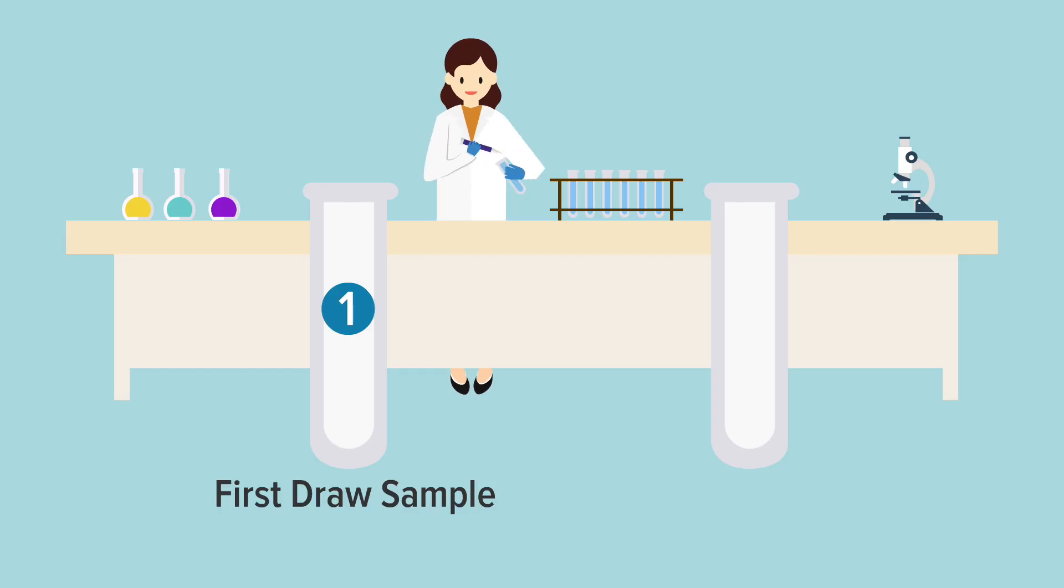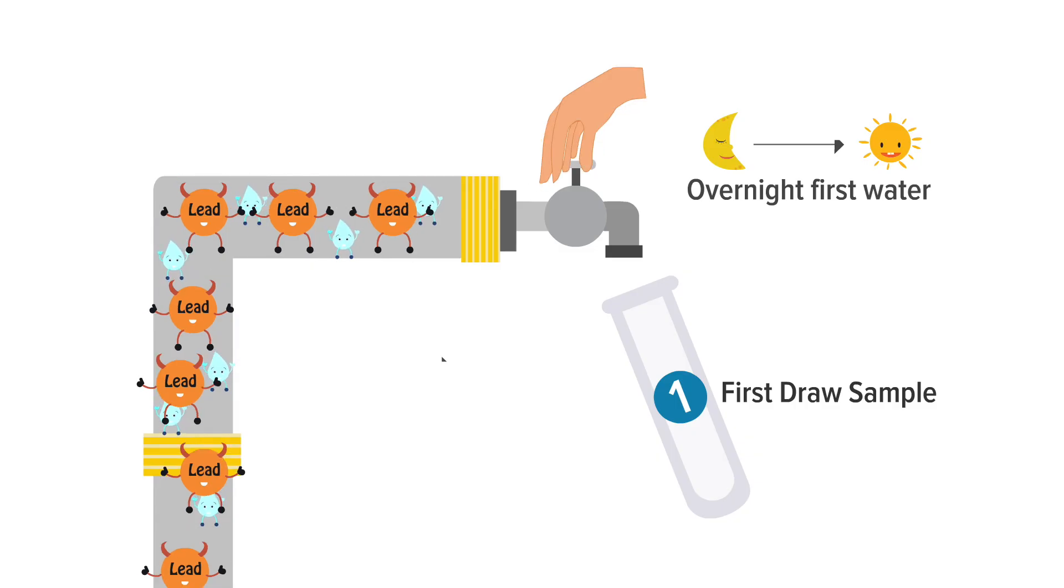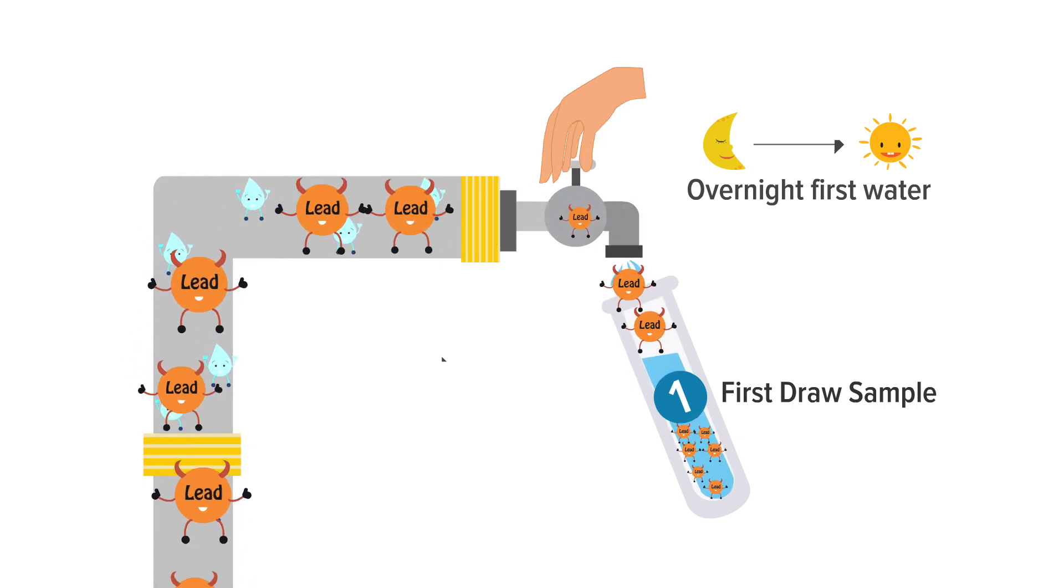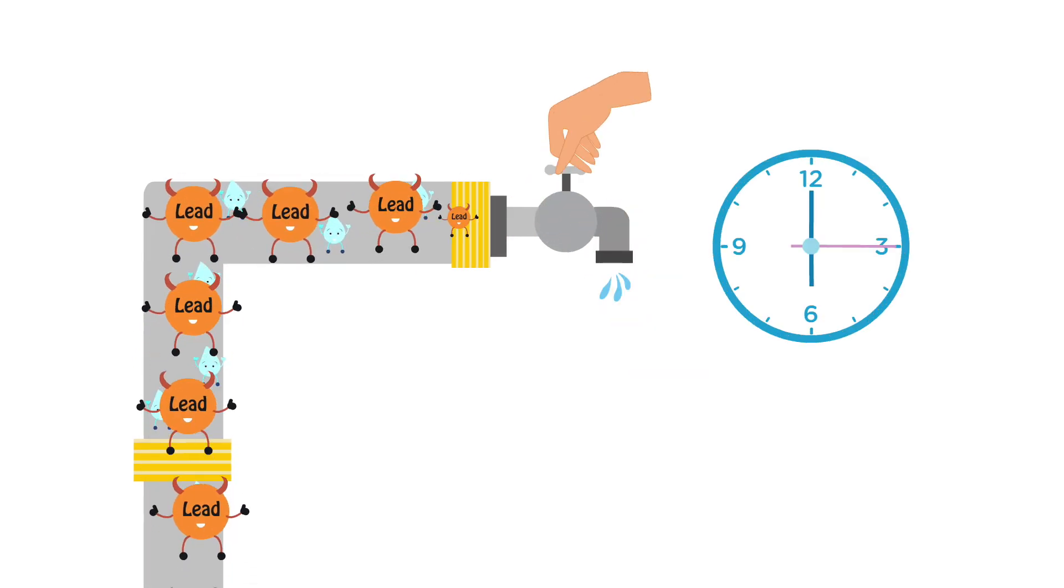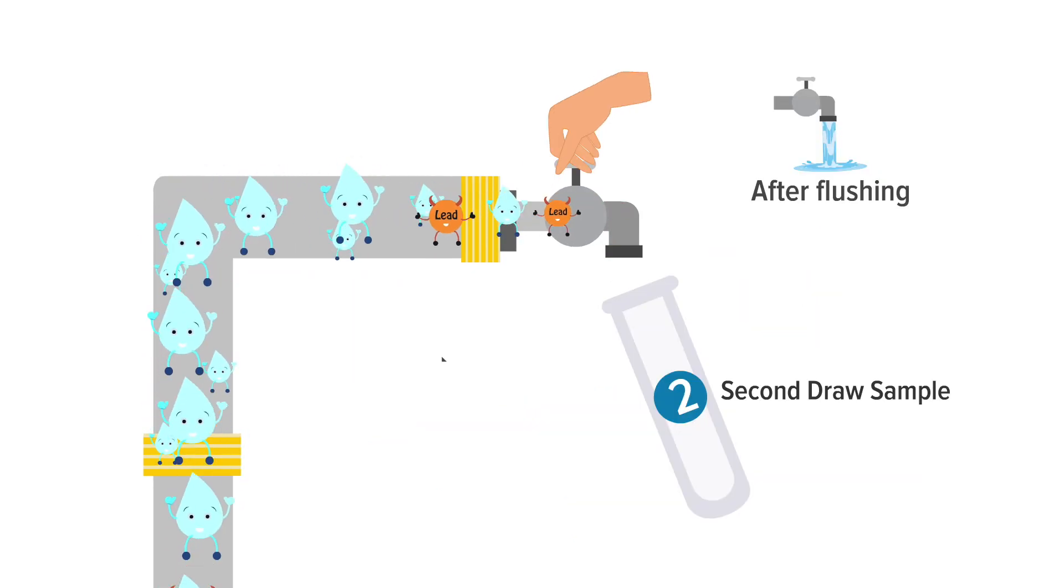To test for lead, Los Angeles Unified takes two water samples. The first is taken when a tap is turned on after sitting at least overnight. Then the district runs the water for 30 seconds and takes a second sample.